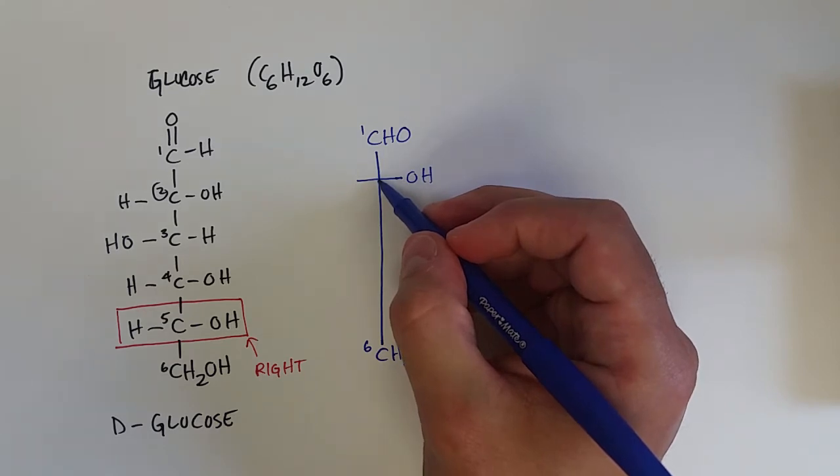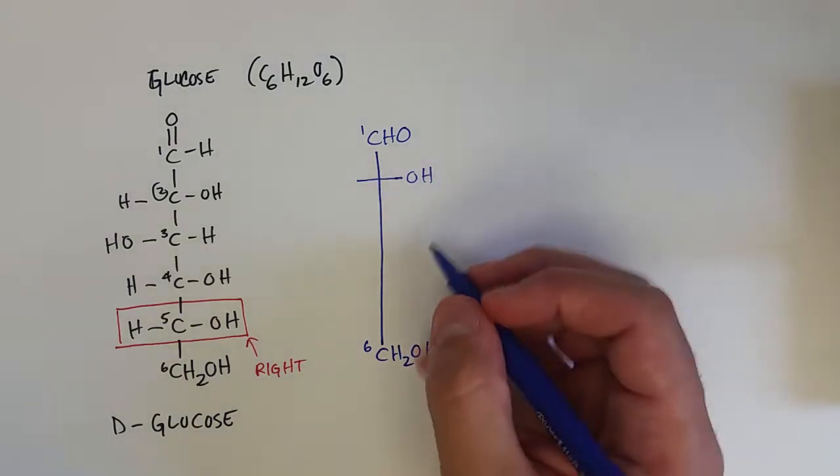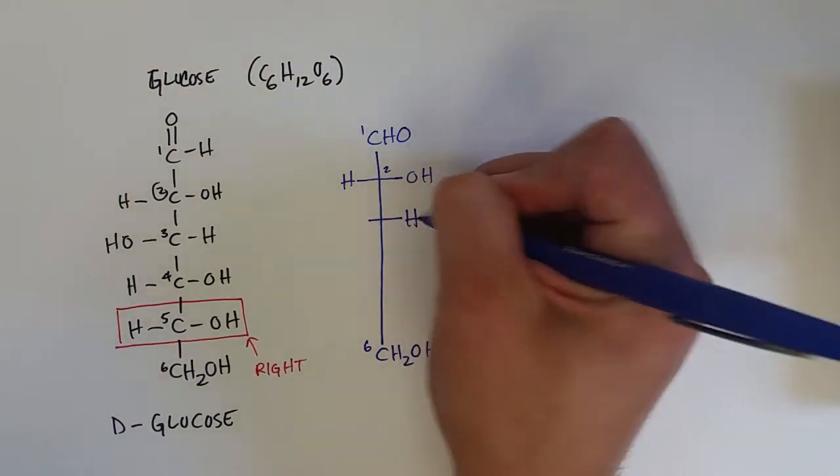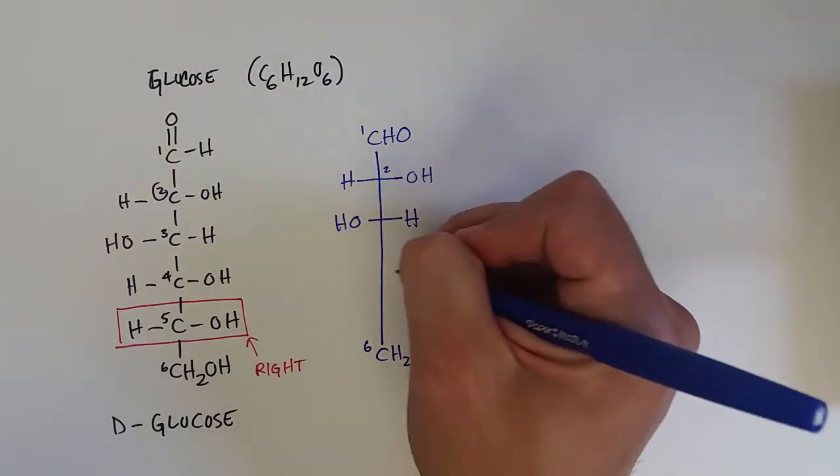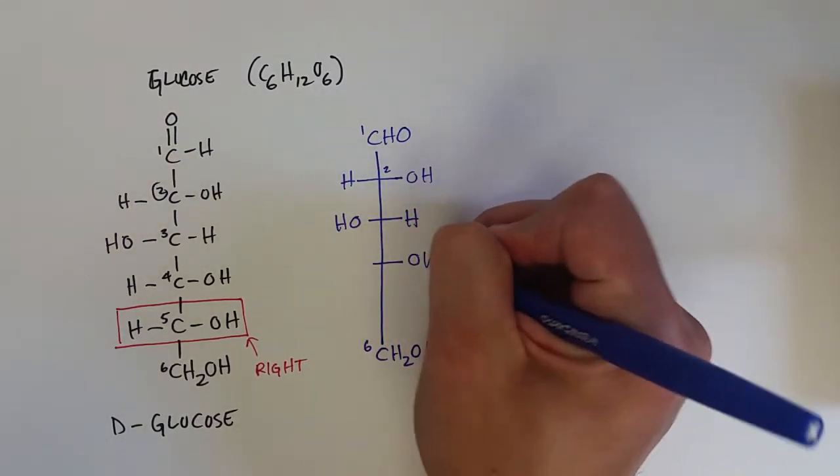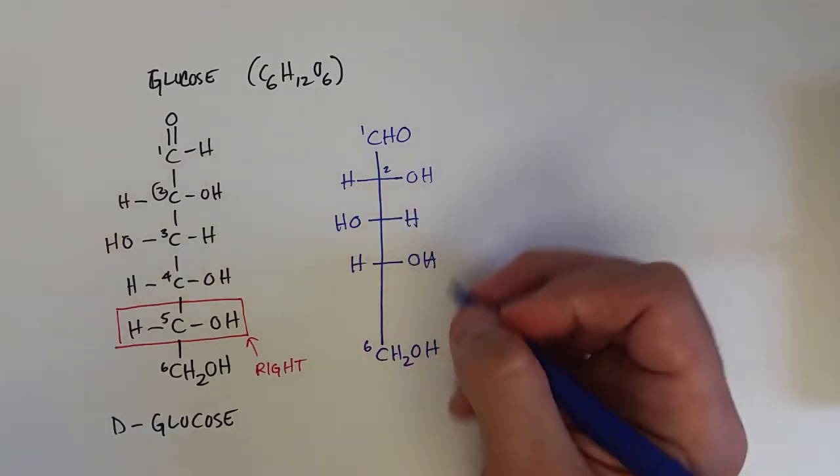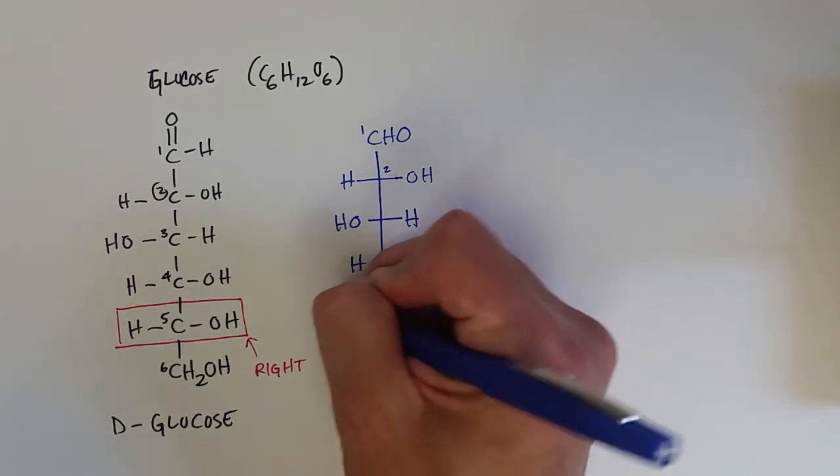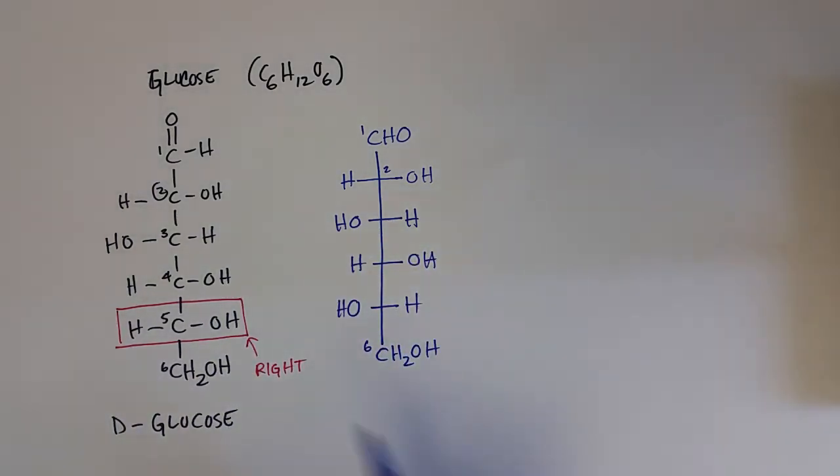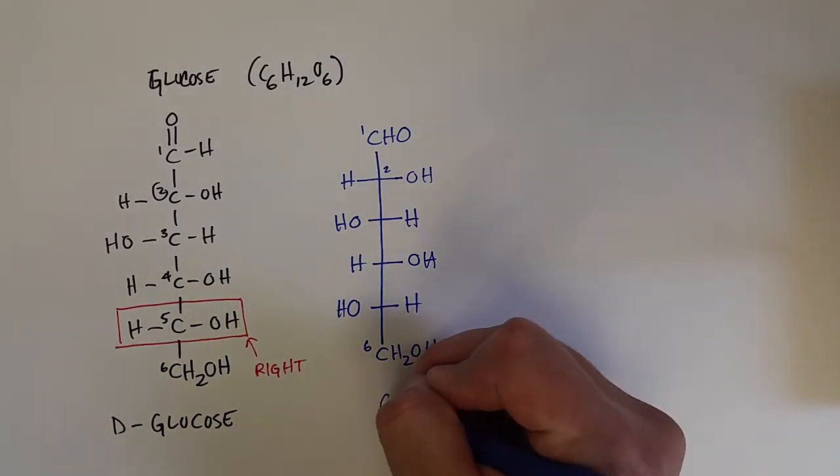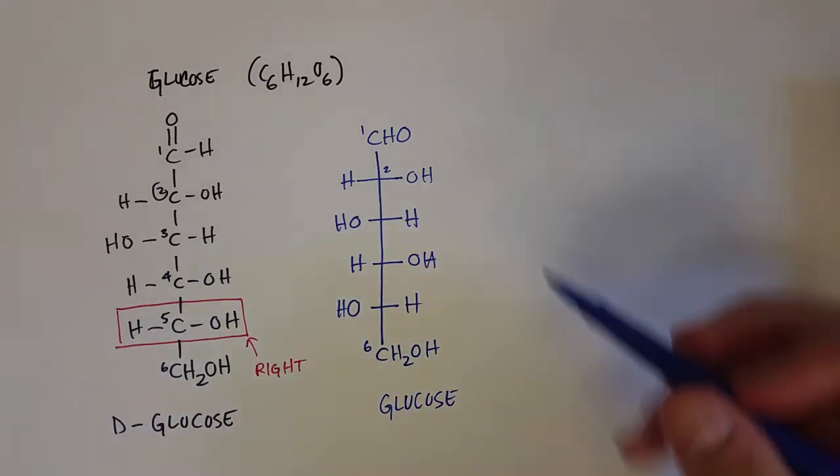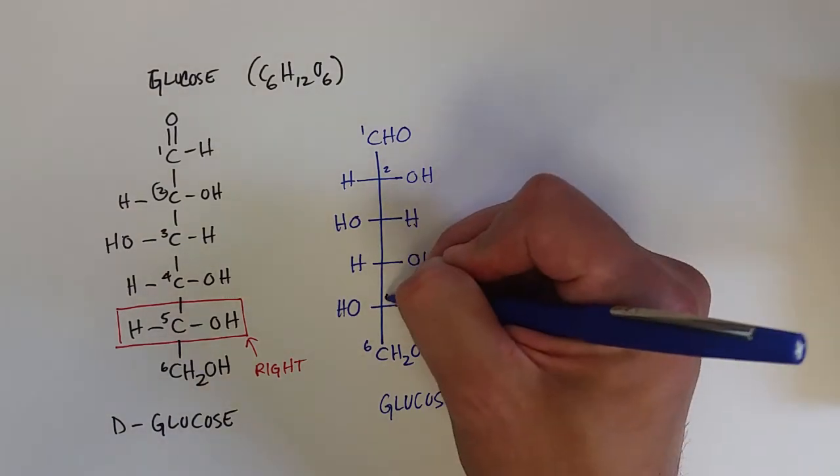...where that T, that cross, that's a carbon there. So that would be my second carbon, and then continue to draw three, four, and five carbons like so. You can see the similarities between this glucose and this glucose written in black and the glucose written in blue.